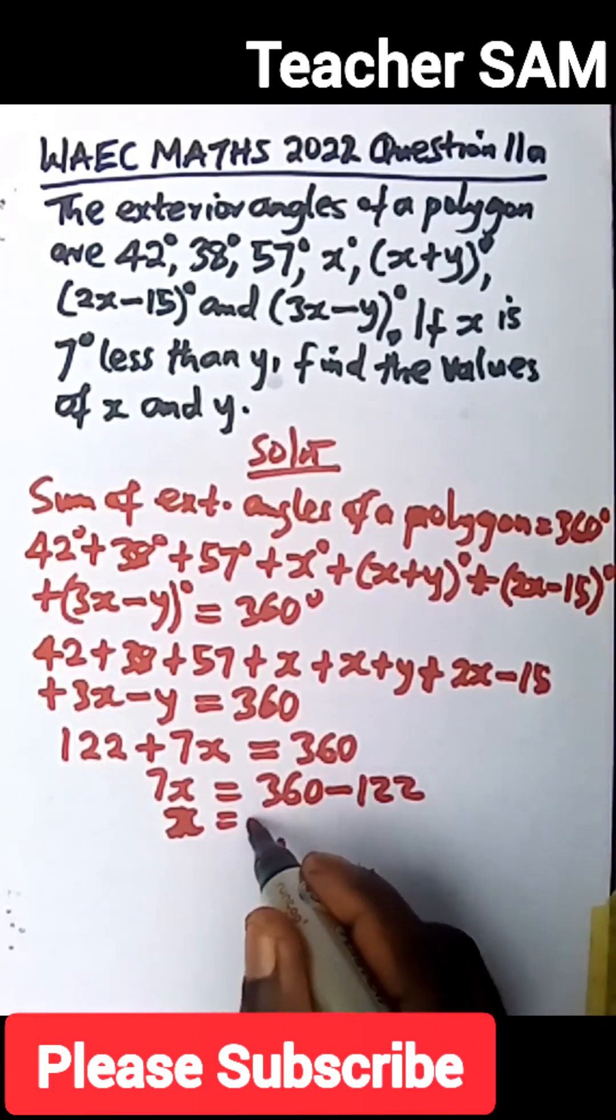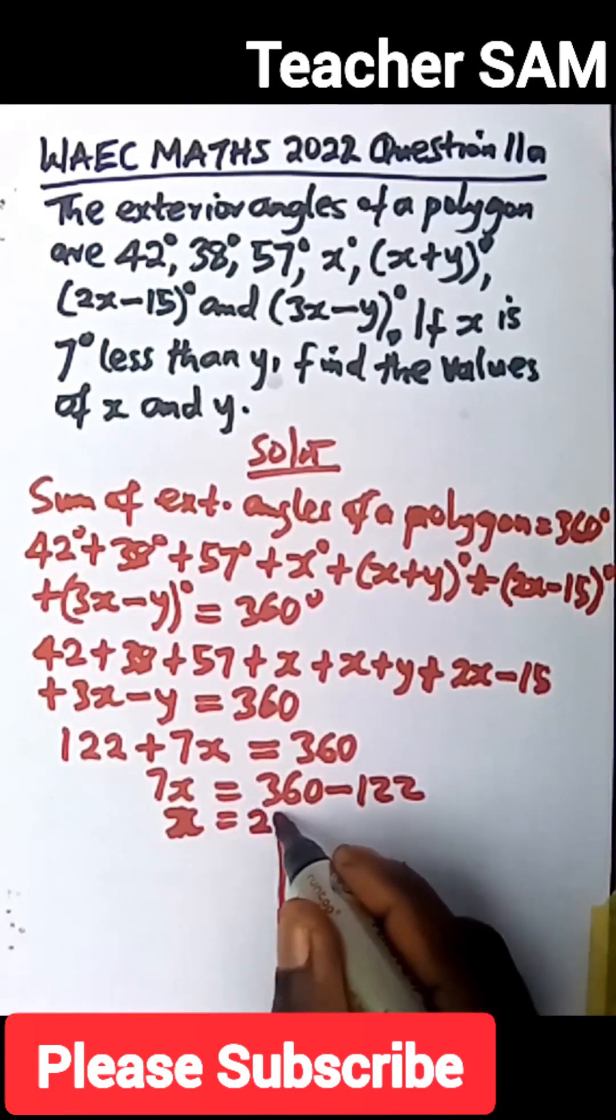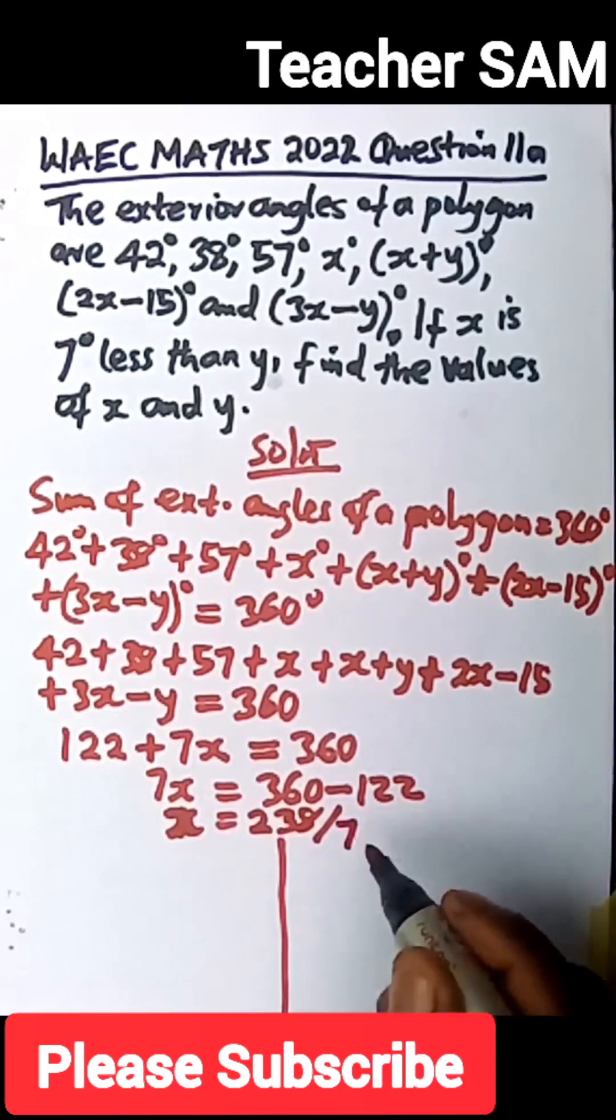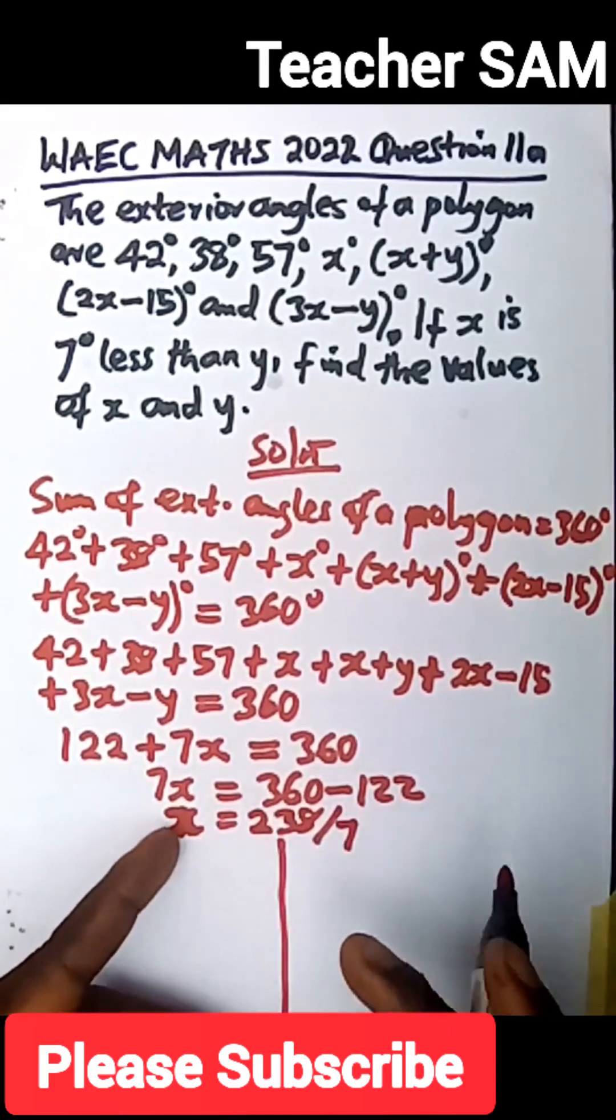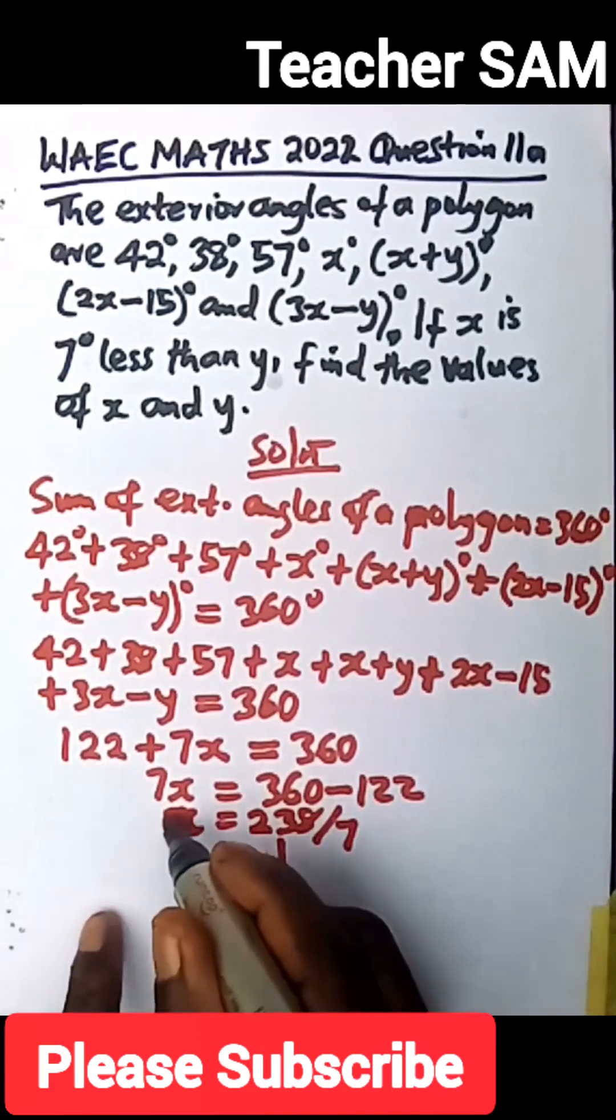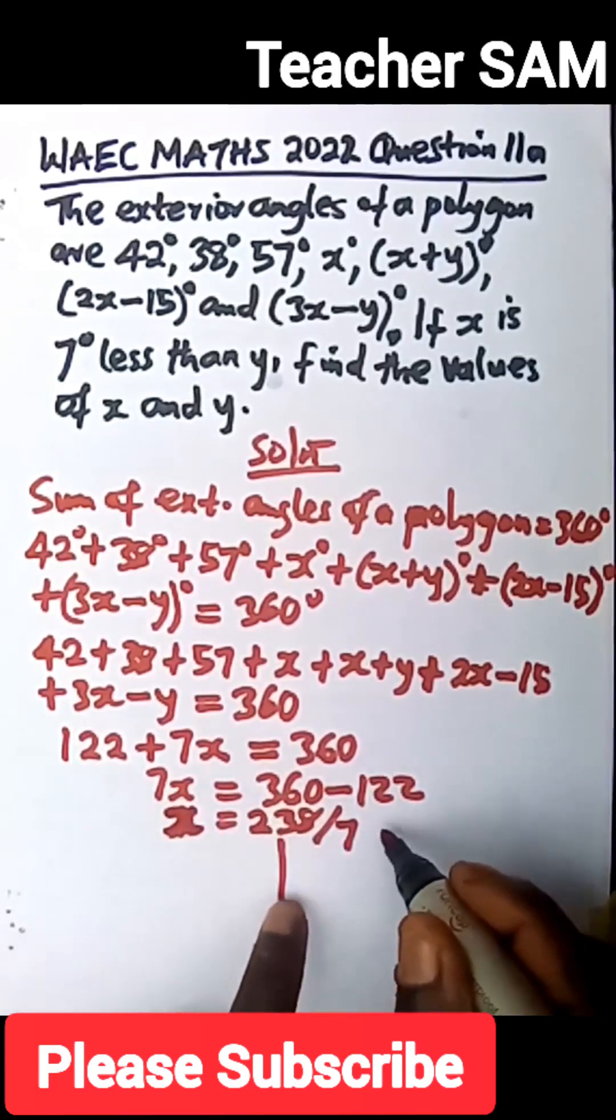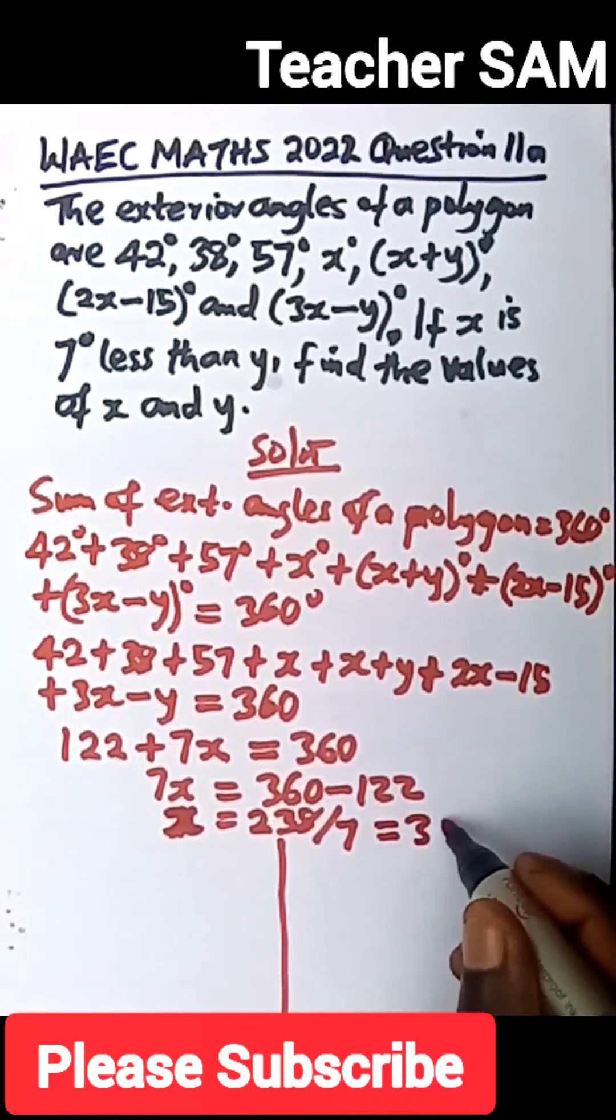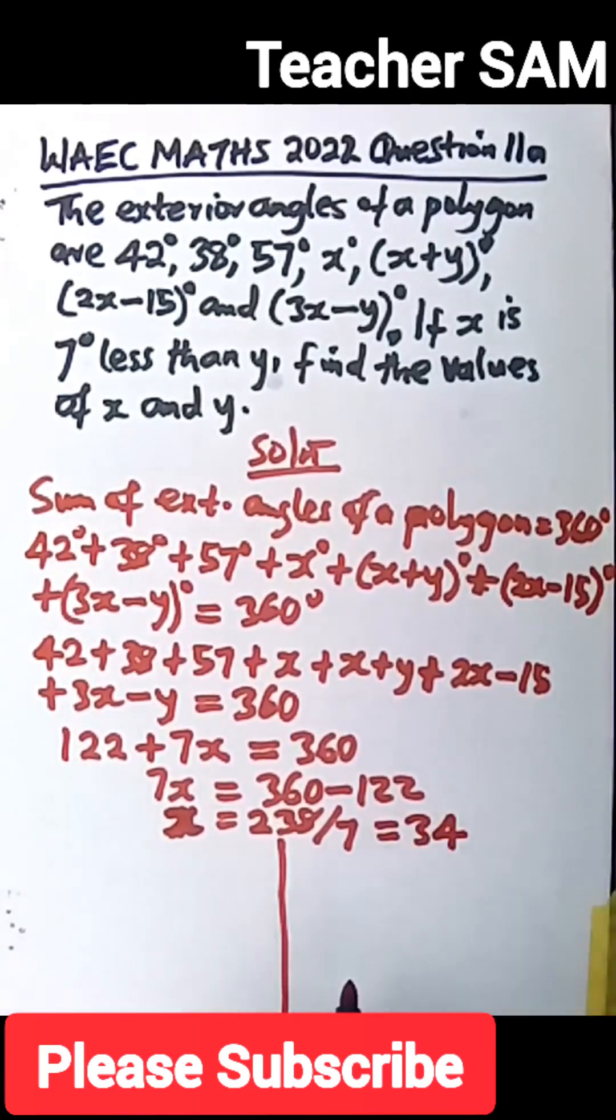That is 360 minus 122. So that will give me 238 divided by 7. So I'm just making x the subject formula. So whatever we have here divided by the 7 so that I can have my value of x. So this is equal to 34.